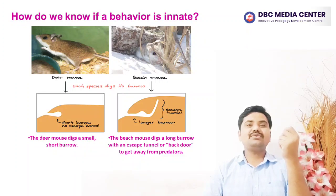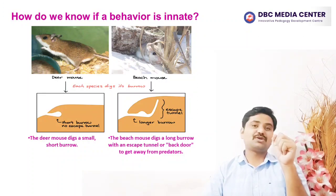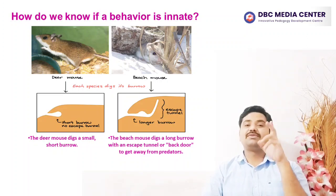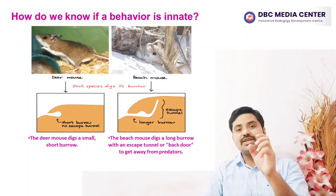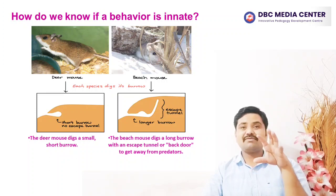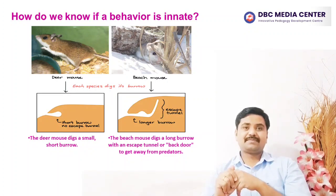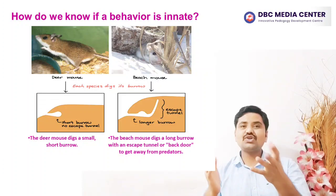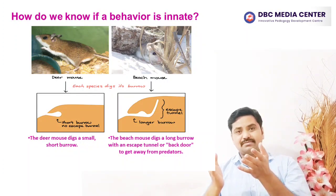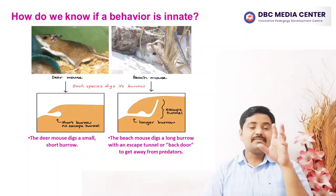Beach mice dug a long burrow with an escape tunnel, while deer mice dug a short burrow without one. The ability of the mice to construct their normal burrow without ever having seen such a burrow before shows that burrowing behavior is indeed innate. Researchers then crossed the deer mouse with the beach mouse — all hybrid mice dug burrows similar to the beach mouse tunnel with an escape tunnel, indicating that escape tunnel digging is a dominant genetic trait, and further testing suggested it may be largely controlled by a single gene.